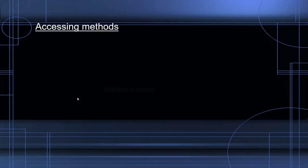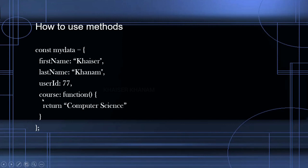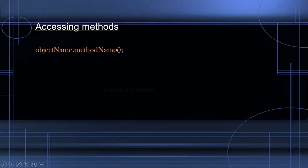Now how to access these methods. For properties we used to give object name dot property name, or use square bracket notation. Now to access methods we are going to do the same thing: object name dot method name. In our example this will be the method name. When we access it we give parentheses — as soon as we give the parentheses, whatever function is assigned and whatever value it is returning, that we will get as a result. There are some more things to understand regarding method names that I will tell you later.